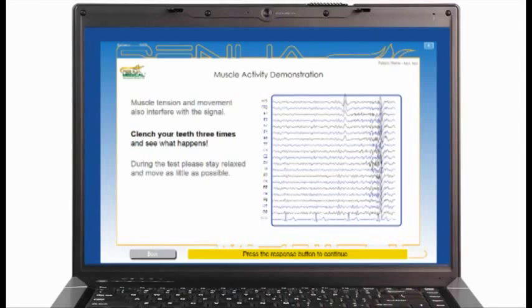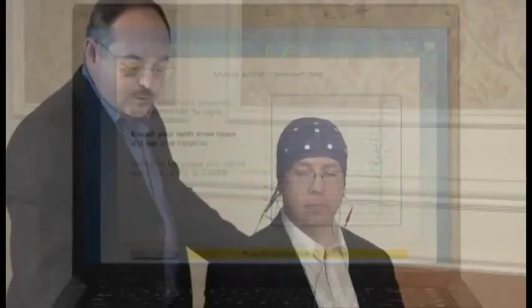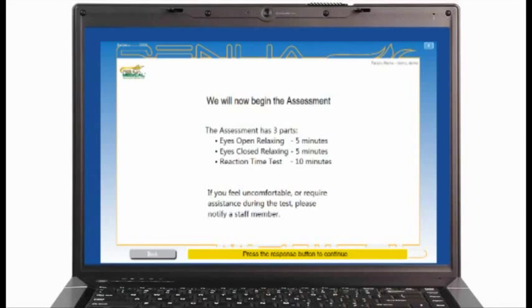Go on to the next screen. This is where you'll clench your teeth three times, following the instructions on the screen. Notice the significant fast wave EEG from EMG that comes when you grit your teeth. You want to try to avoid that during the test. This shows the three parts of the test: eyes open, eyes closed, and the reaction time.